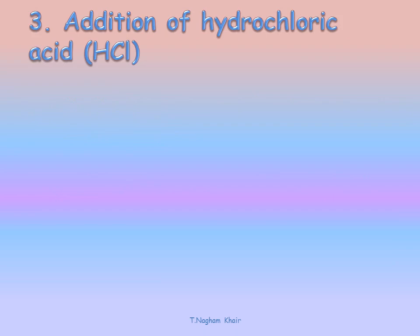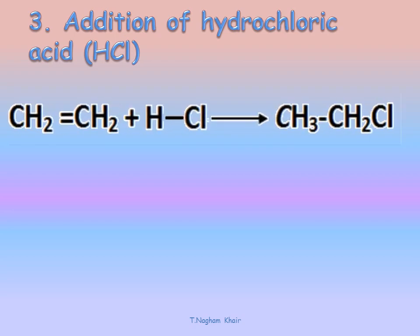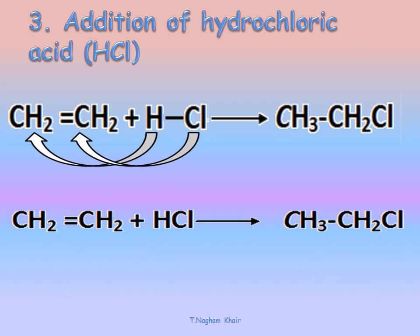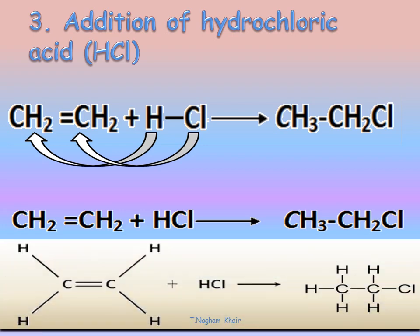The third type of addition reaction is the addition of hydrochloric acid, HCl, same mechanism. Ethene CH2=CH2 reacts with HCl — the double bond breaks. Hydrogen bonds to the first carbon atom and chlorine bonds to the second carbon atom, giving CH3-CH2Cl, a saturated hydrocarbon. Here we have the condensed structural formula and the structural formula.